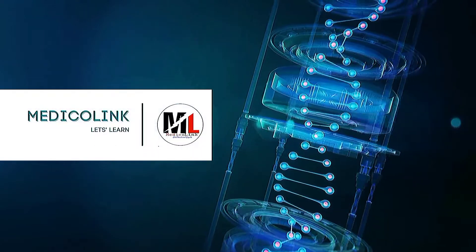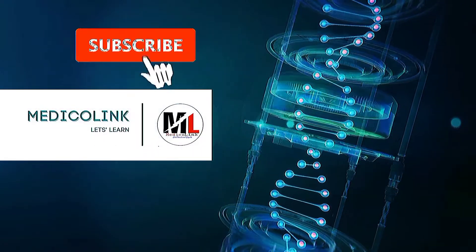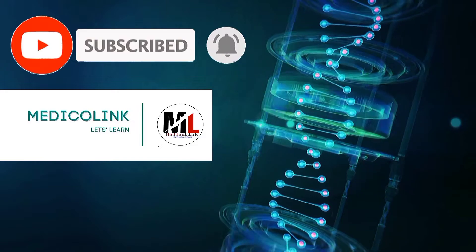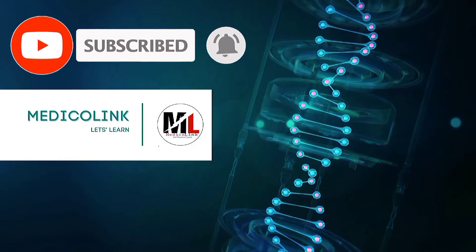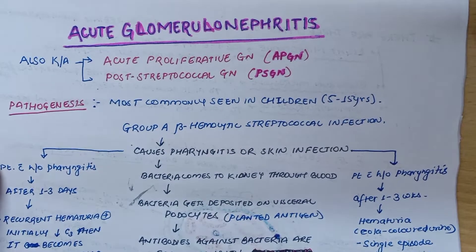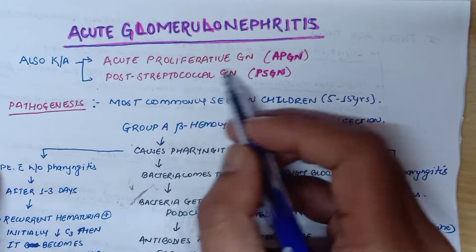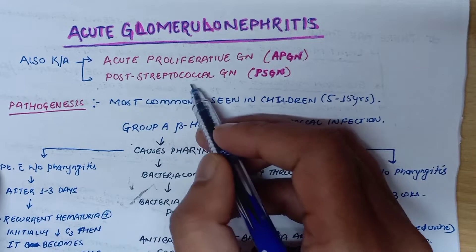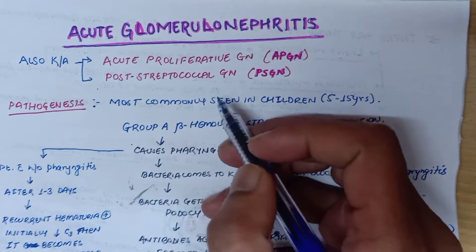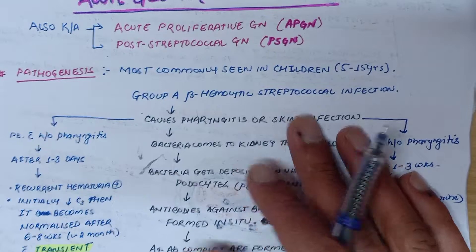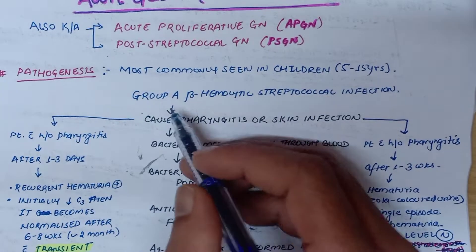Welcome to Medicalink. Don't forget to subscribe for more videos. We are now going to talk about acute proliferative glomerulonephritis, also known as post-streptococcal glomerulonephritis. Coming to the pathogenesis, it is most commonly seen in